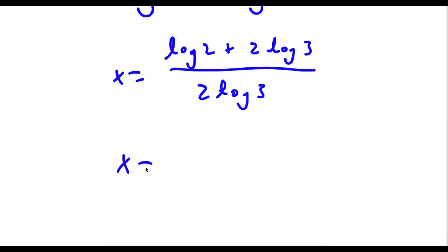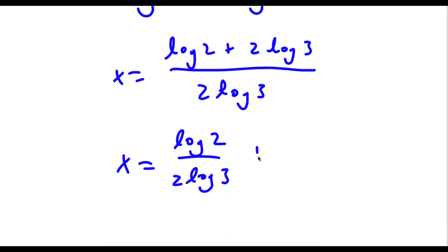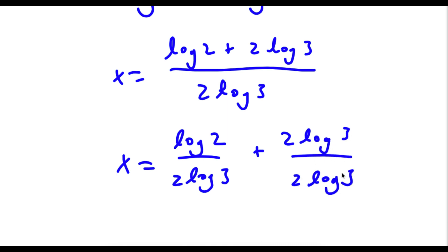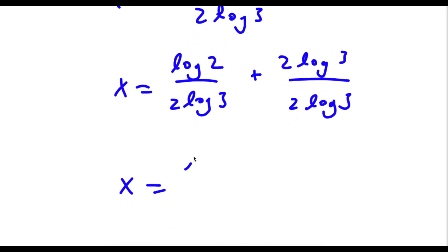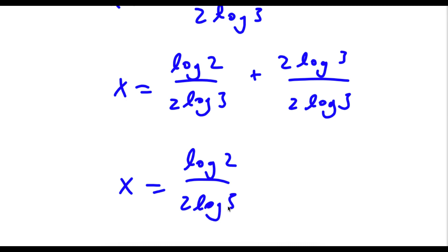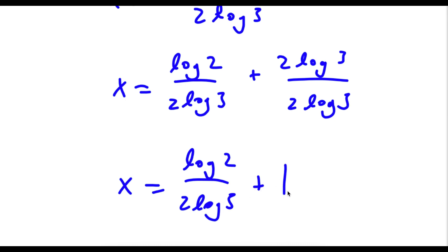Now this is the same thing as log 2 over 2 log 3 plus 2 log 3 over 2 log 3. And 2 log 3 over 2 log 3 is simply equal to 1. So I have log 2 over 2 log 3 plus 1.